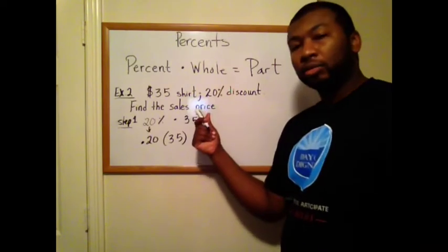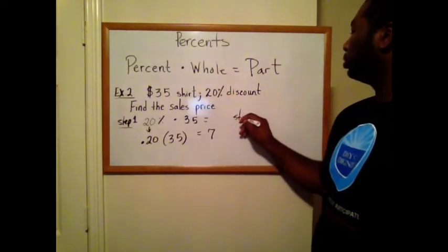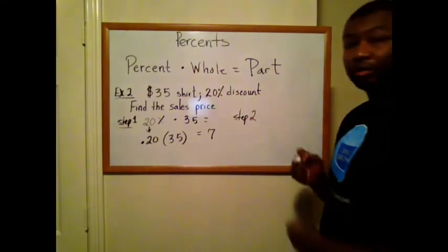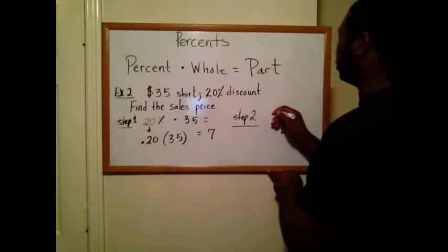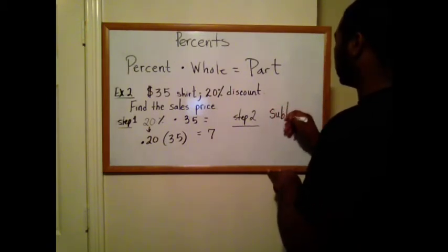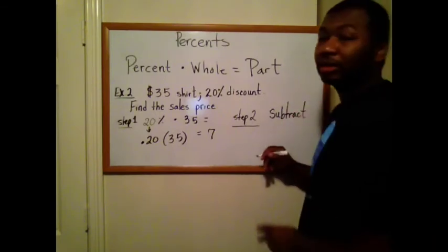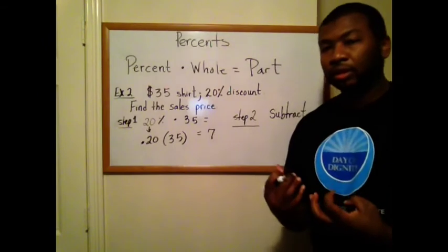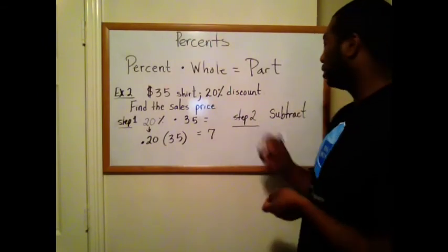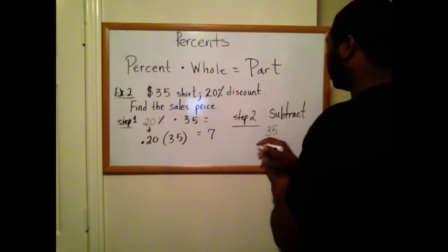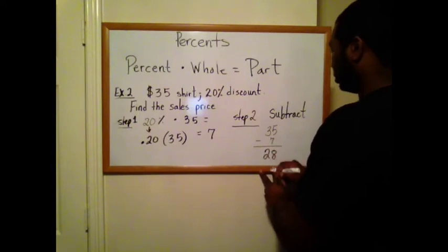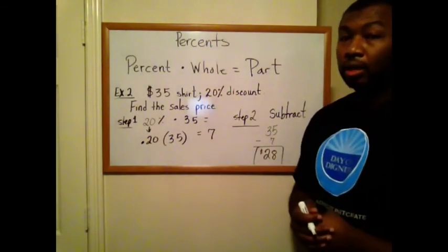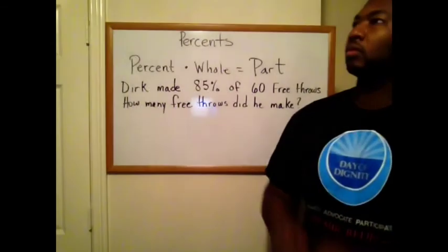So what's the sales price? Step two is find what that sales price is. In this case, I'm going to have to subtract. The reason why we love discounts is because they make the price lower. So a $7 discount means $7 less. So you just subtract $35 minus the $7 discount, and that's a $28 shirt.